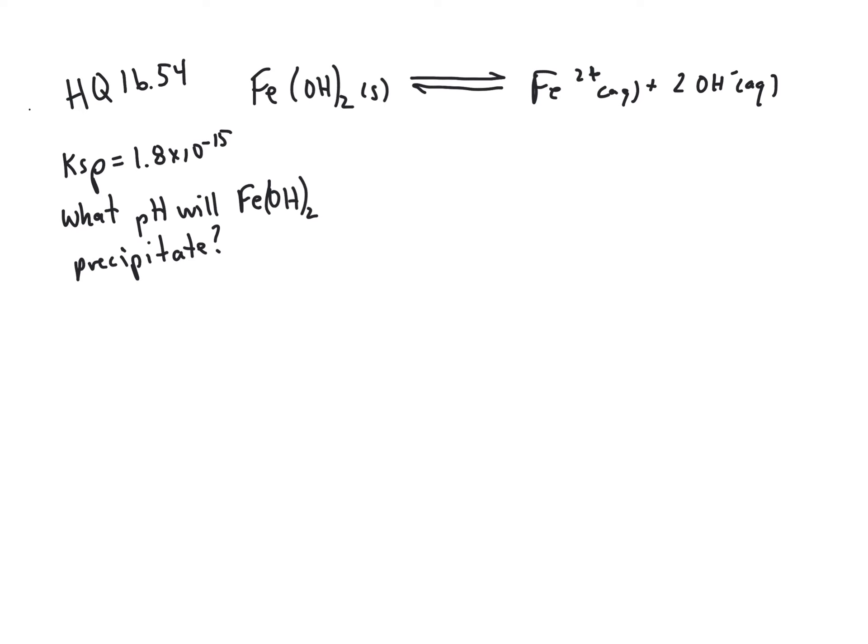For homework question 54, we're given the following information about iron(II) hydroxide. Iron(II) hydroxide has a Ksp of 1.8 times 10 to the minus 15, and we're asked, what pH will iron(II) hydroxide precipitate from solution?